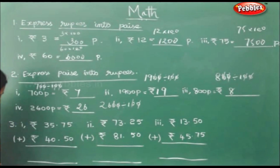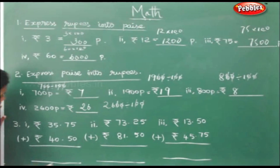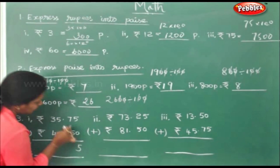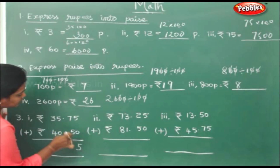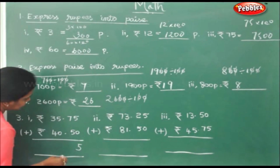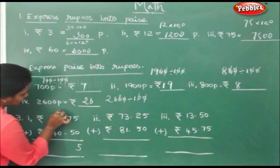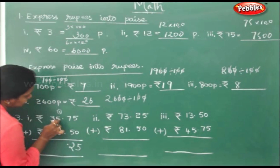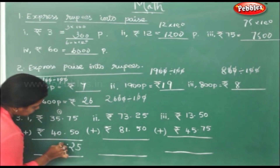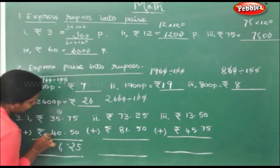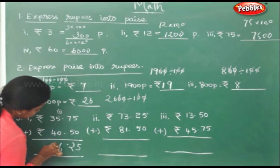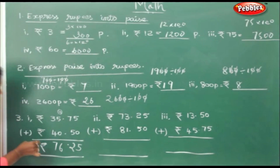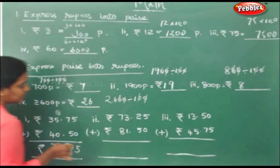Now addition. 5 plus 0 is 5. 7 plus 5 is 12. 5 plus 1 is 6. 4 plus 3 is 7. The answer is rupees 76 and 25 paise.